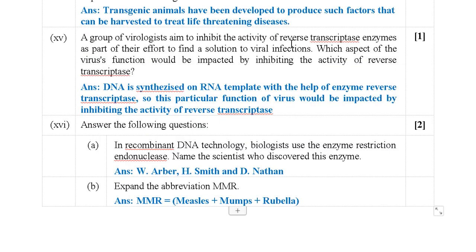Next: A group of virologists aim to inhibit the activity of reverse transcriptase enzymes to find a solution to viral infections. Which aspect of the virus's infection would be impacted? Inhibiting reverse transcriptase would disturb the pathway where DNA is formed from RNA. This particular pathway — RNA to DNA conversion — will be affected if reverse transcriptase is inhibited.